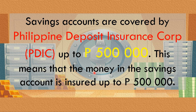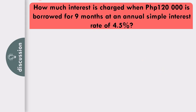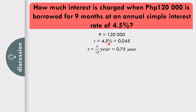Next problem: how much interest is charged when P120,000 is borrowed for 9 months at a simple interest rate of 4.5%? The principal is P120,000, the rate is 4.5% or 0.045, and the time is 9 months. Since time is in months, we convert to years by dividing 9 over 12, which equals 0.75 years.